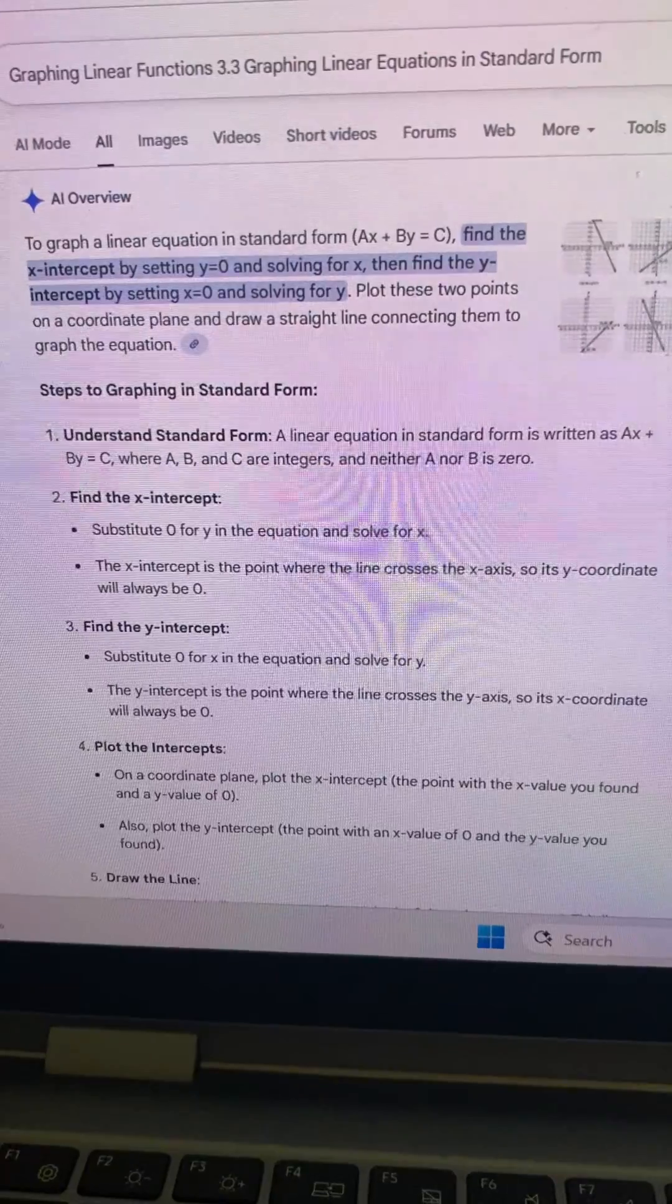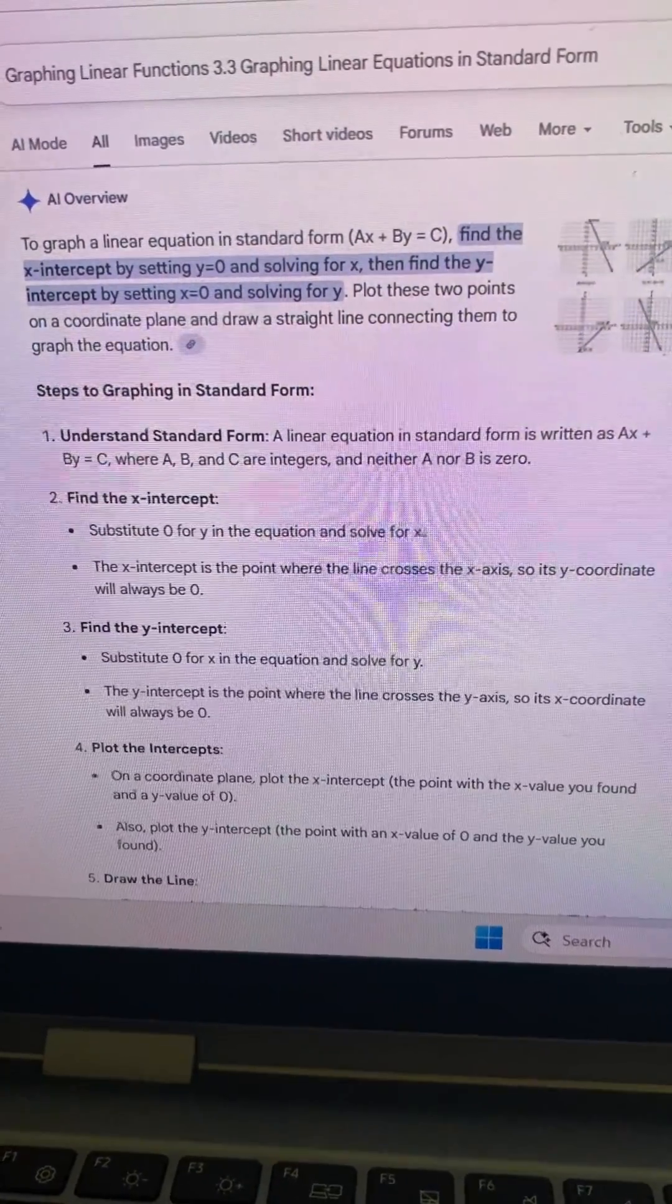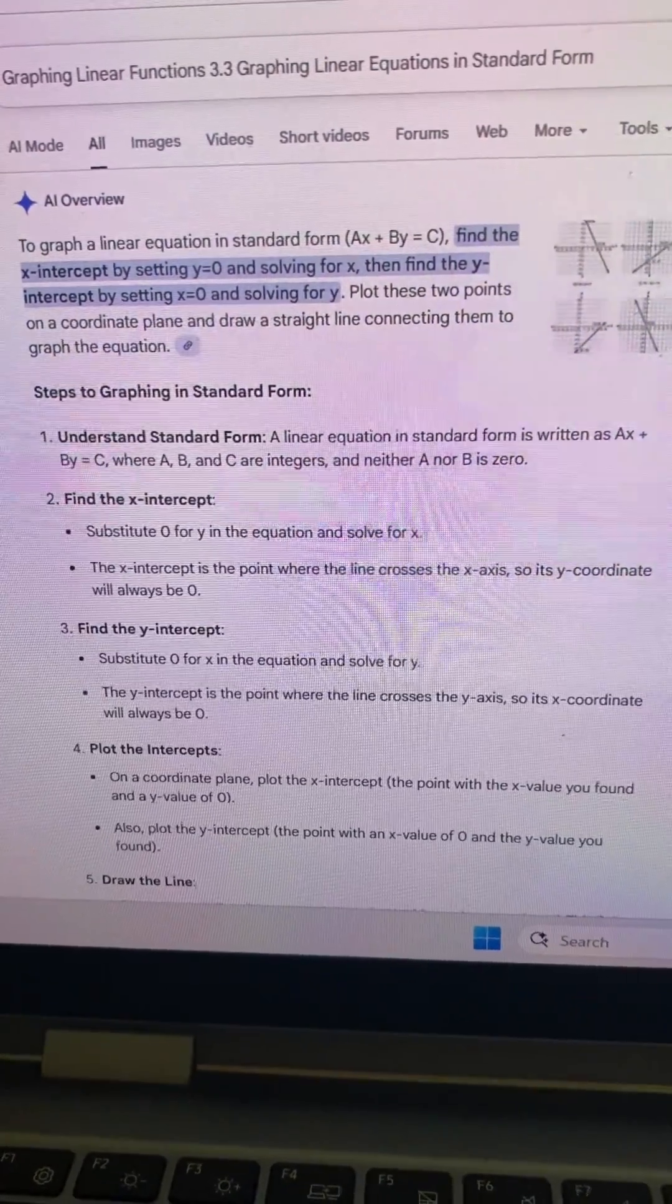Find the x-intercept. Substitute 0 for y in the equation and solve for x. The x-intercept is the point where the line crosses the x-axis, so its y-coordinate will always be 0.